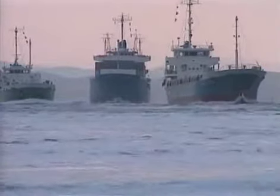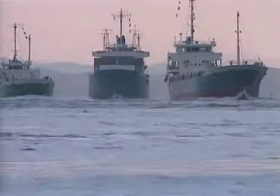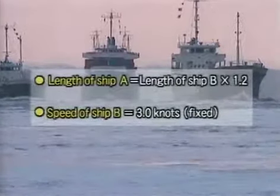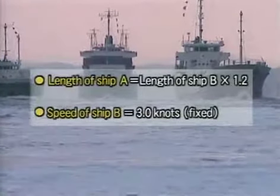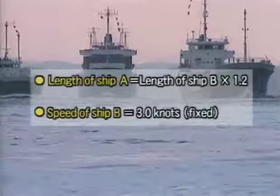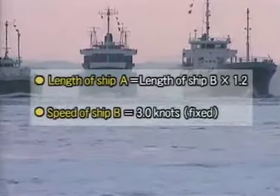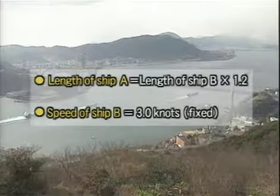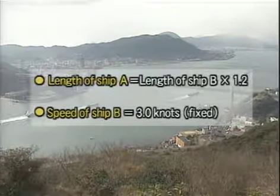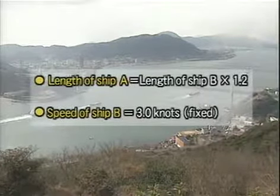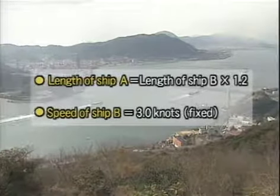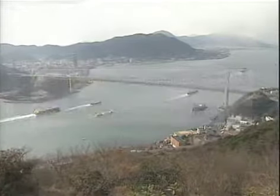Let's take a look at the effect of ship speed. In this case, the ratio of ship speed of overtaking ship A to that of overtaken ship B is 1.2, and the beam distance between them is half of the ship length. The two ships are steered to maintain parallel courses. The simulation is made by changing the speed of overtaking ship A, maintaining the speed of overtaken ship B at 3 knots.